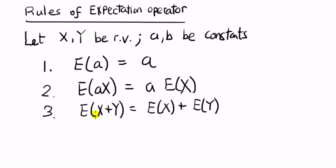Next, the expected value of a sum of two random variables is equal to the sum of the expected value of each random variable. Because of this, we say that the expectation operator is a linear operator — that means the expected value of a sum of things is equal to the sum of the individual expectations.